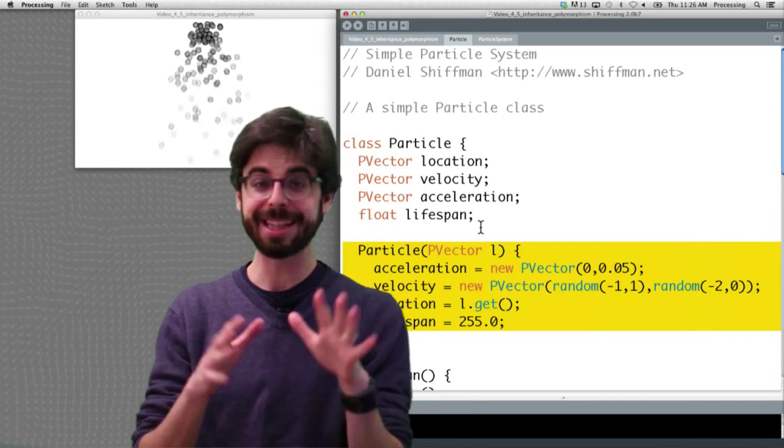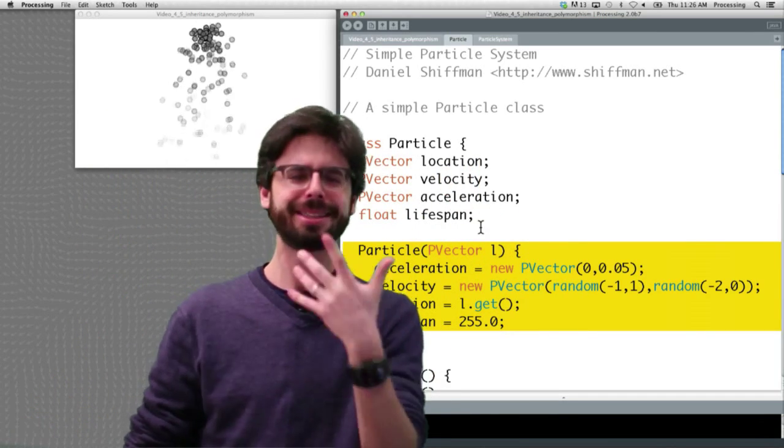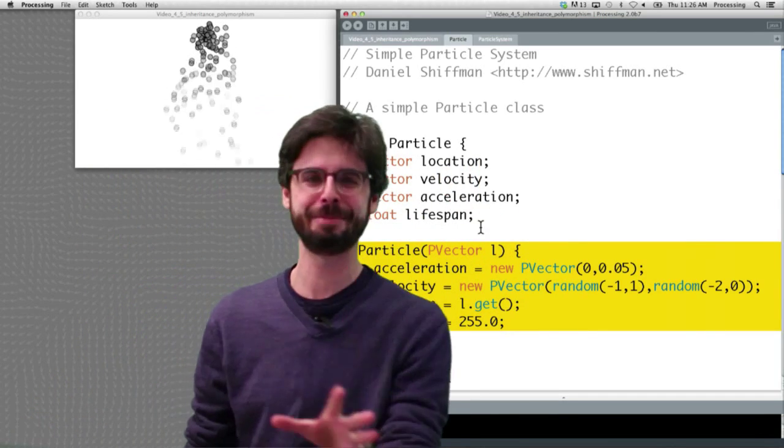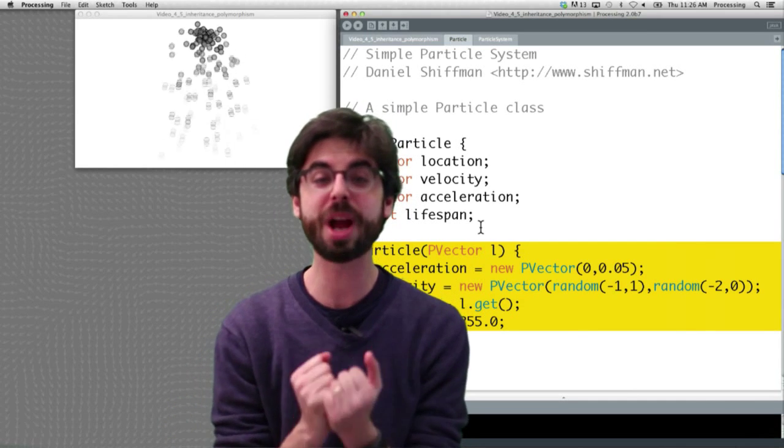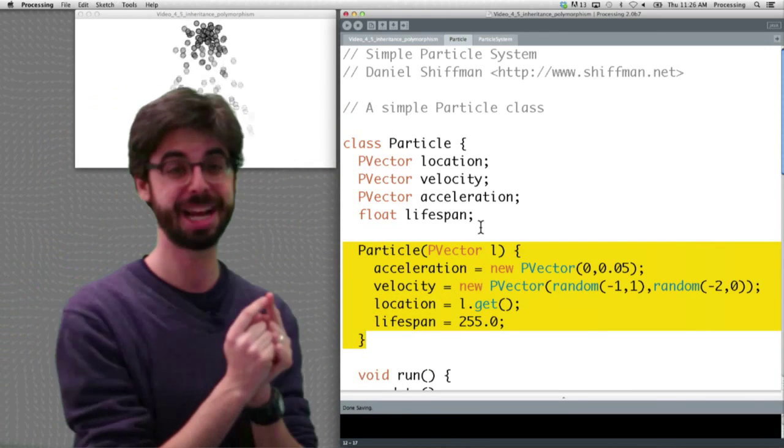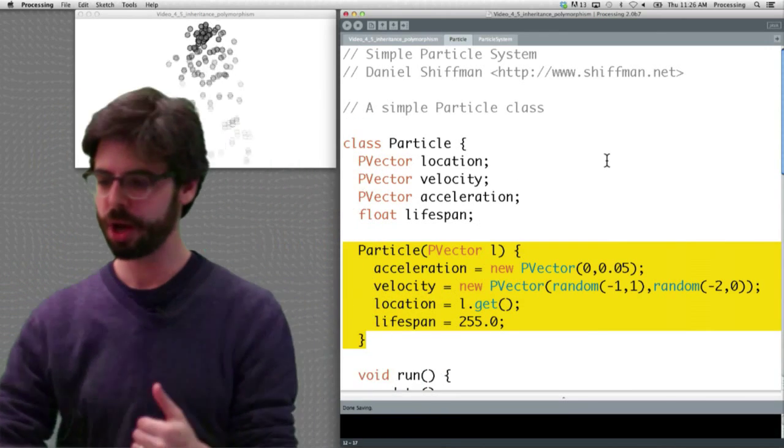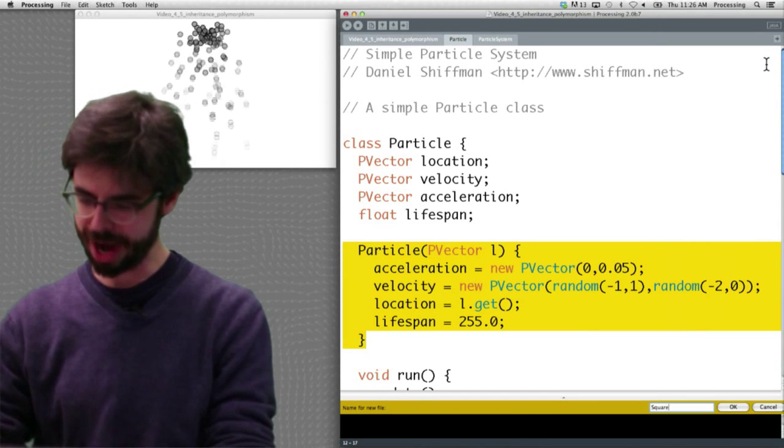So what we want to do is say, I'm going to do something totally crazy. It's not crazy, actually, it's not crazy at all. I'm going to do something incredibly simple. Let's do the simplest thing we could possibly do with inheritance. Let's write a new particle class where the only thing that's different is it draws them as a square instead of a circle. So we're going to make a new tab, we're going to call it square particle.